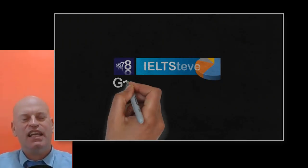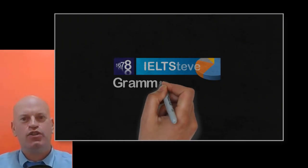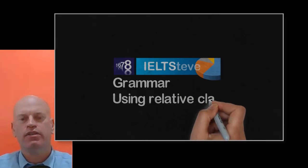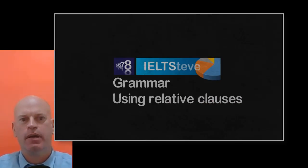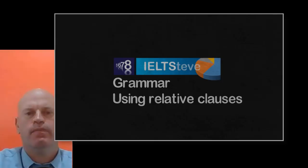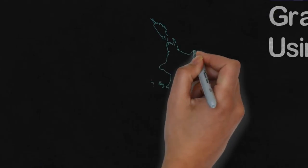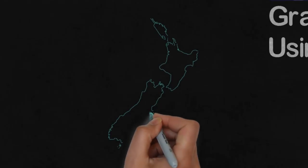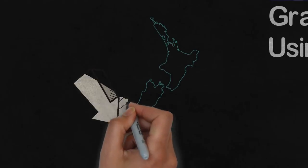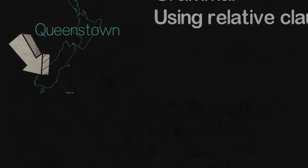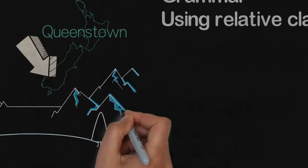Hi there. Let's talk today about using grammar and using relative clauses in your grammar. So for a start, let's think about these two things. If we want to talk about Queenstown, which is a town in New Zealand, and we want to combine that with the idea of a mountainous area, we could use a relative clause.